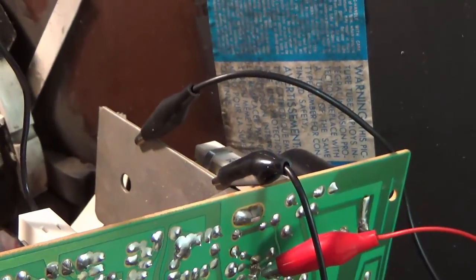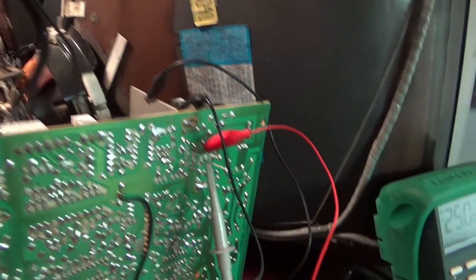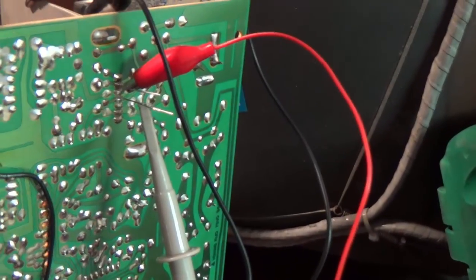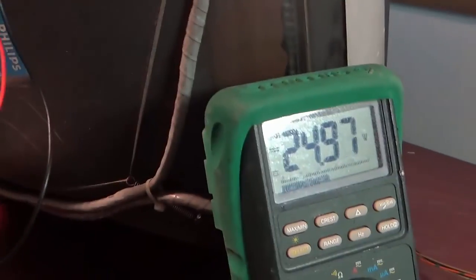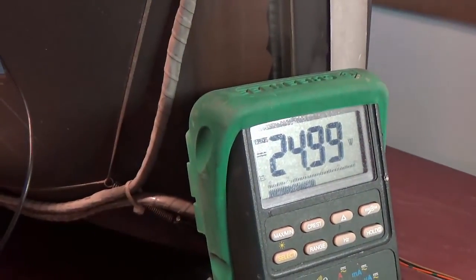On pin six, I have the red multimeter lead, and we're looking for 24 volts. As you can see, we have that 24 volts. We're sitting at, it's a little high, 24.9, 25 volts.